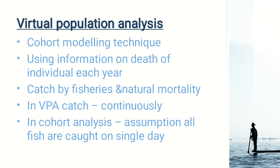There are two types of analysis to understand population dynamics: virtual population analysis and cohort analysis. Virtual population analysis uses information on deaths of individuals each year, catches by fisheries, and natural mortality. By knowing the history of the population, we can predict future catches. In virtual population analysis, it is a continuous process, whereas in cohort analysis, the assumption is that all fish are caught on a single day. These are the key differences between the two methods.